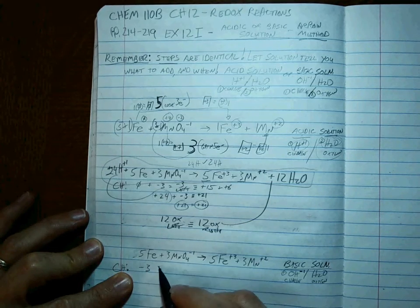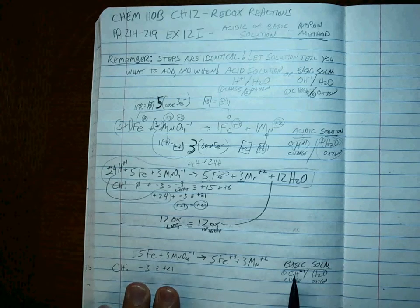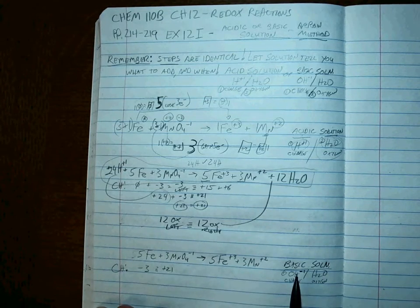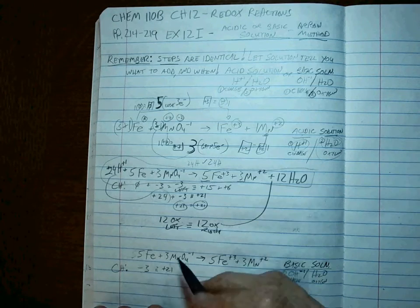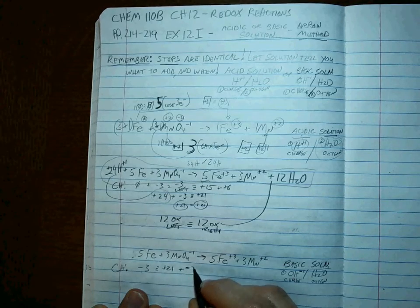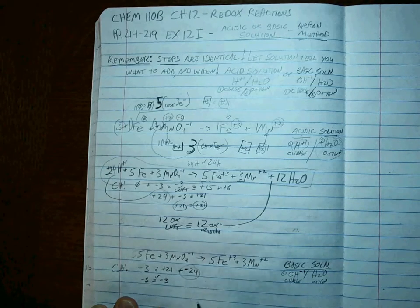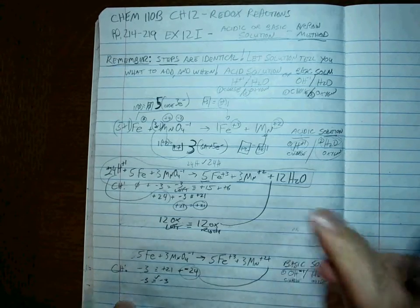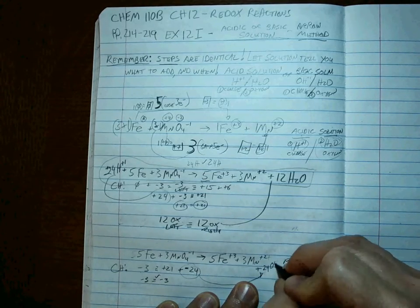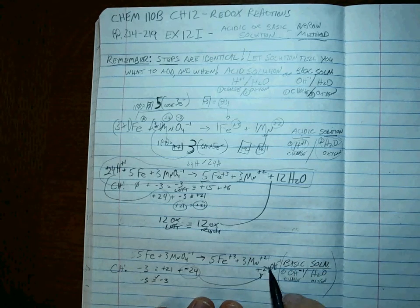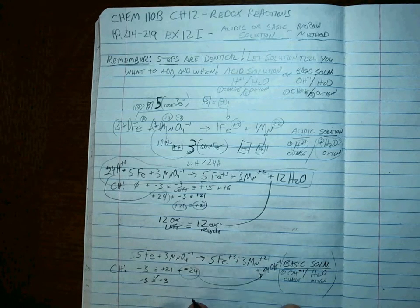Remember, the charge ended up being minus 3 on the left and plus 21 on the right. So how do we add minus 1's to get this to be the same? Notice that if we add minus 1's over here, we can never get the charges to balance out. Don't we have to add negative 24 on this side to get it to be minus 3? Well, how do you get negative 24 on this side? We're adding 24 hydroxide ions on that side, right?